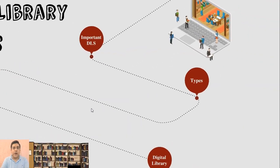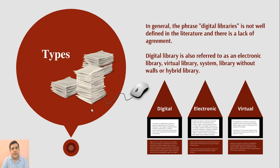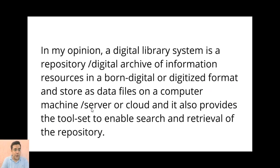Now let us talk about the types of digital library systems. In general, the phrase 'digital library' is not well defined in the literature and there is a lack of agreement. Digital library is also referred to as an electronic library, virtual library, library without walls, or hybrid libraries. Let us see the difference between digital, electronic, and virtual library.